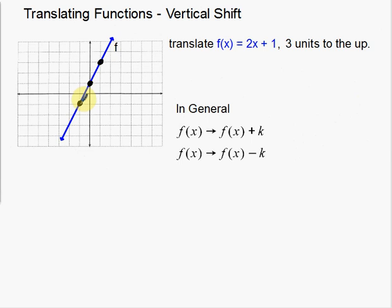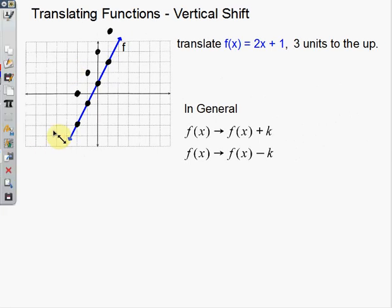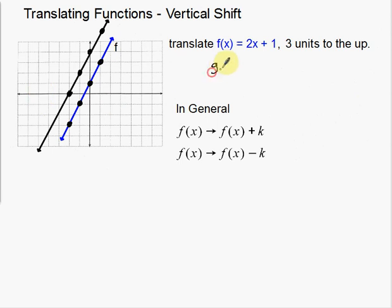I'm going to take each point and move it three units up. I can see that one of the points might go off my grid, so I'm going to find one additional point to make sure I do this correctly — it doesn't hurt to always put an extra point in there. Now I'll draw a straight line through those new points. You do need a really straight line so that when I write the equation for the new function, I can read it accurately.